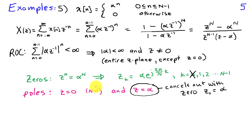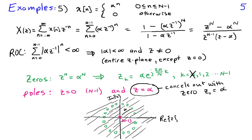So we have a total of N minus one zeros, at Z sub k equals alpha times e to the j 2 pi over N times k, for k equals one through N minus one, and N minus one poles at Z equals zero. In the Z-plane sketch, we have a pole of multiplicity N minus one at the origin — indicated by the notation N minus one next to the pole — and the zeros are spaced around a circle of radius alpha at angular intervals of 2 pi over N. The region of convergence is the entire Z-plane except Z equals zero.